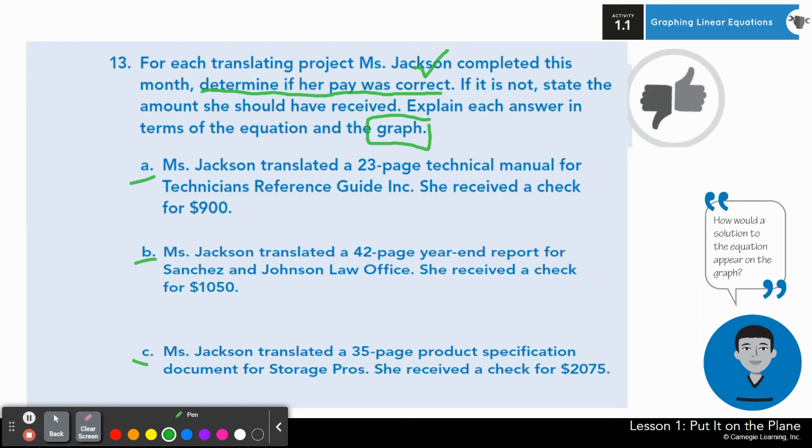Alrighty, let's check answers. For A, yes, Ms. Jackson's pay was correct for 23 pages. She would have earned $900. You can check and verify using the graph or the equation. For B, the price or the check she received was not correct. If you calculated or used the graph, you might have noticed that she forgot to add in the $325 fee.